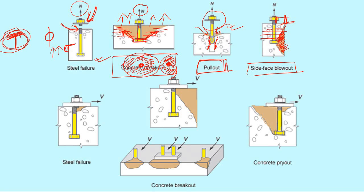Now for shear failures. Just like the steel failure under tension, under shear the steel may also fail because of insufficient diameter or insufficient grade of the anchor bolt. You must ensure you provide sufficient diameter of the anchor bolt to carry the shear force.